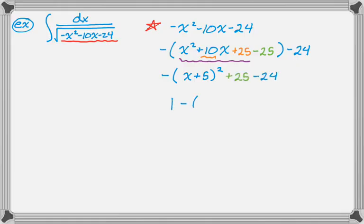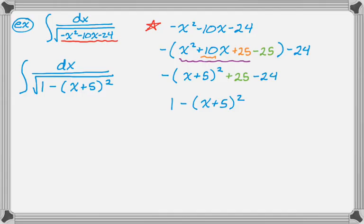This I can rearrange into 1 minus the quantity x plus 5 squared, which is good because if I put that inside a radical in the denominator, it looks exactly like arcsine. So I get this perfect arcsine integral. So this is going to be sine inverse of x plus 5 and then plus c.